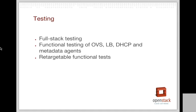Testing is definitely something the Neutron team has spent a lot of time on, really ramping up since Ice House. In Juno, we got full API coverage for all of the Neutron APIs in Tempest. We're expanding to include full-stack testing in-tree — there's a spec very close to landing. We're going to get increased functional testing of all agents: the OVS agent, LinuxBridge, DHCP and Metadata agents, and we're going to finish the work around targetable functional testing.